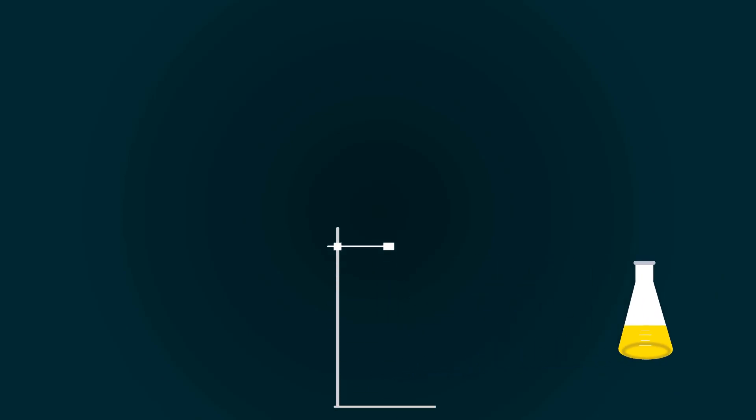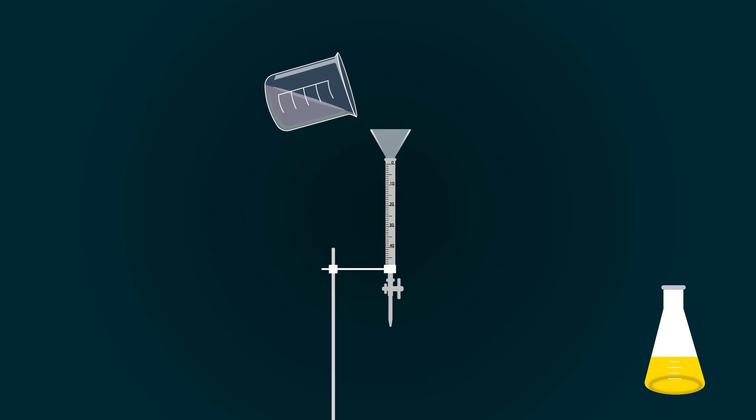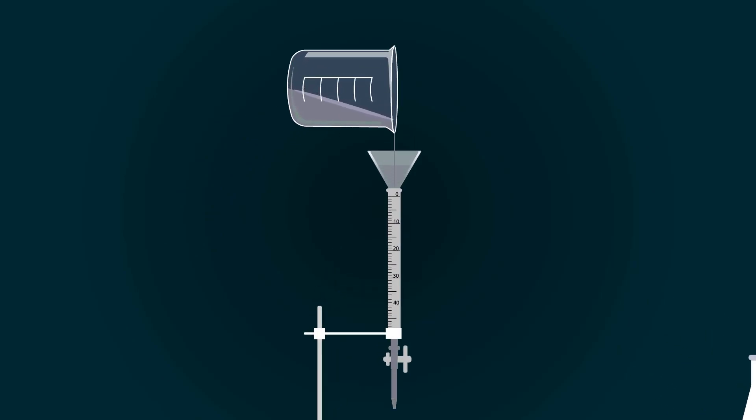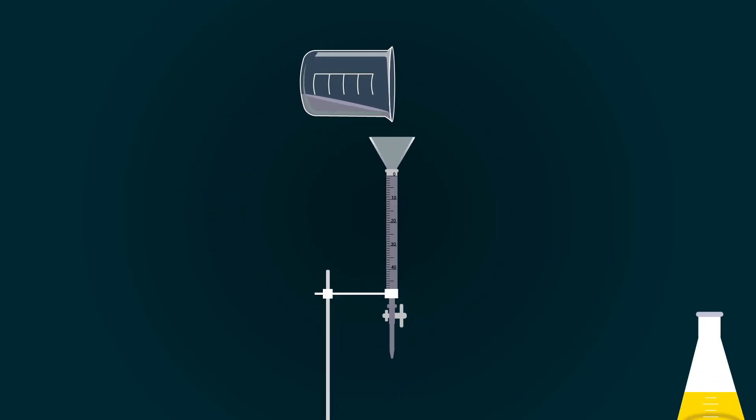Now take the iron stand and adjust the burette into the stand. Put the funnel on top of the burette. Take the 0.1 molar solution of HCl and add it with the help of the funnel into the burette. Fill the burette up to the zero point carefully.